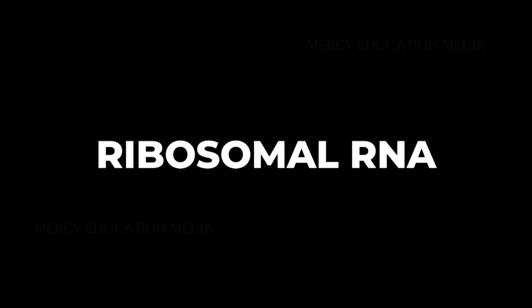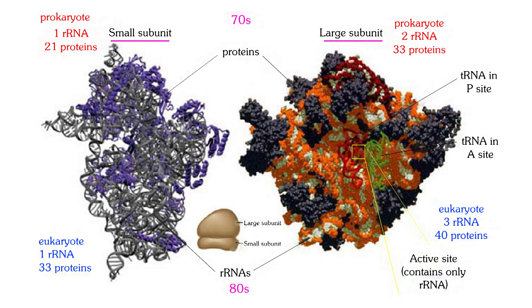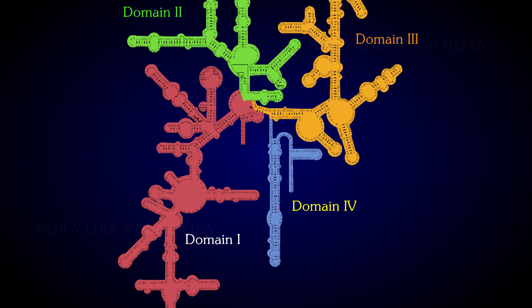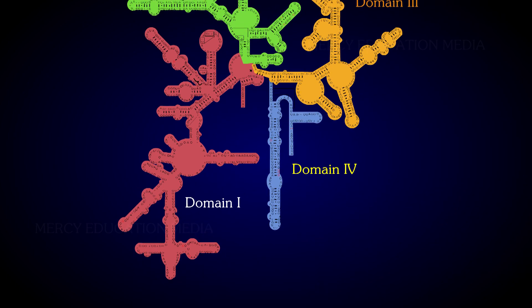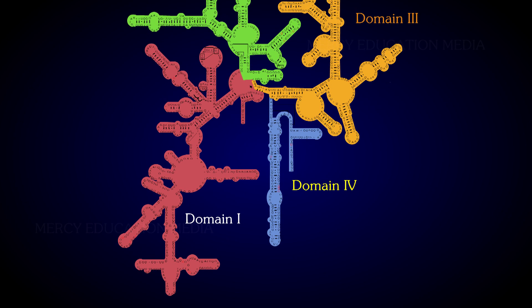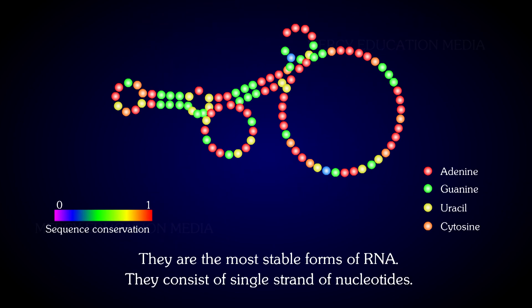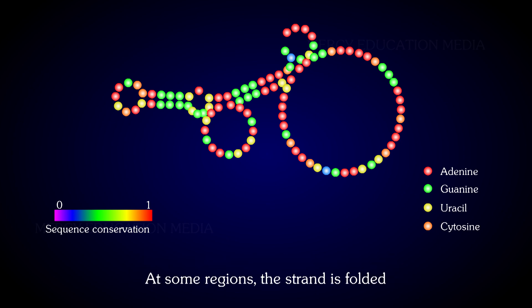Describe ribosomal RNA. rRNA is found in the ribosomes. It represents about 40-60% of the total weight of the ribosome. Relatively, it constitutes about 80% of the total RNA of the cells. They are produced in the nucleus, and they are the most stable forms of RNA. They consist of a single strand of nucleotides, and at some regions the strand is folded.